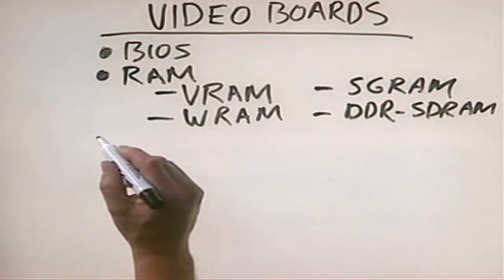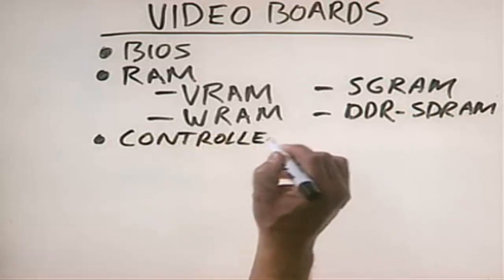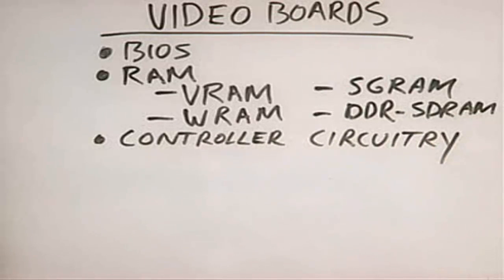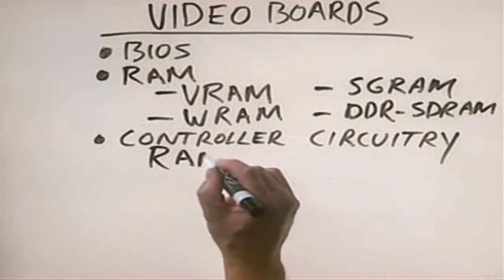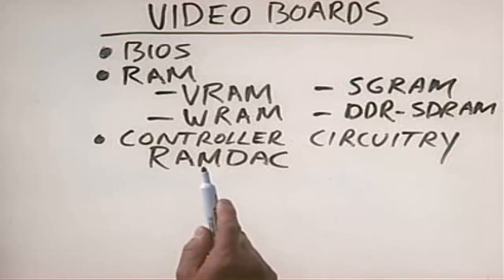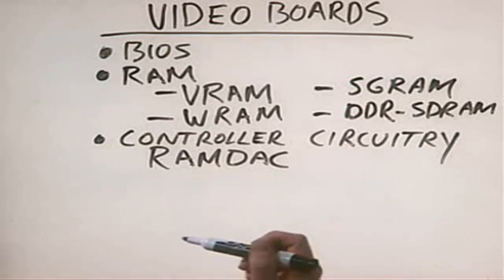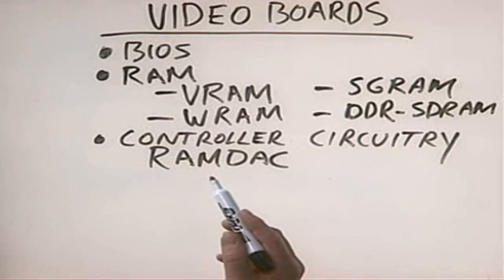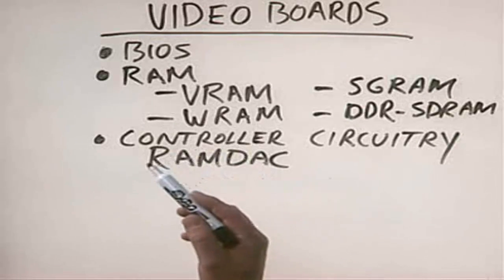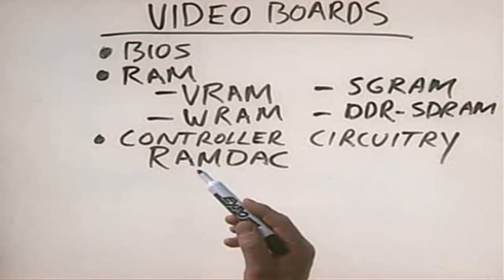In addition to the BIOS and the RAM, we also have on the video board the controller circuitry, also called the RAM DAC. RAM DAC stands for Random Access Memory Digital to Analog Converter. The RAM DAC is actually a CPU — a small microprocessor — built right into the video adapter board itself. It converts the digital signal that the video board receives from the motherboard into an analog signal that can be sent to an analog VGA monitor.